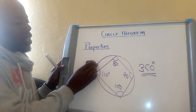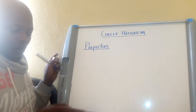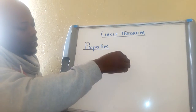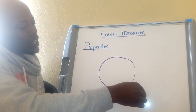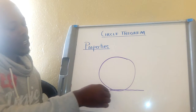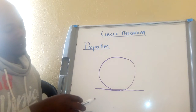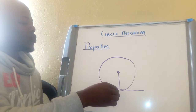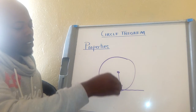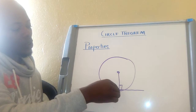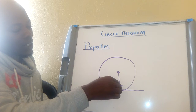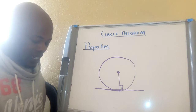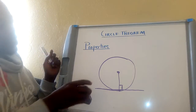The next property says a tangent line forms 90 degrees where it touches the radius of the circle. The angle between the radius and the tangent line is 90 degrees. That is also an important property.